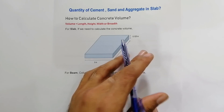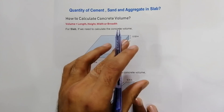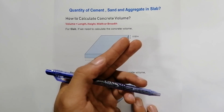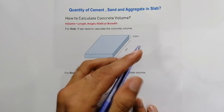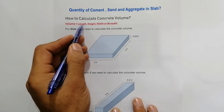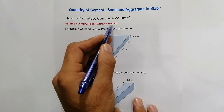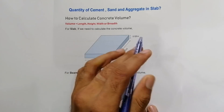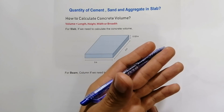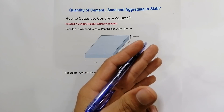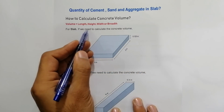So how can we find the volume of slab, beam, or column? To find the volume we need three dimensions. The formula is: Volume = Length × Height × Width (or Breadth). With this we can get the volume of any structure, and then we are able to find the quantity of cement, sand, and aggregate easily.